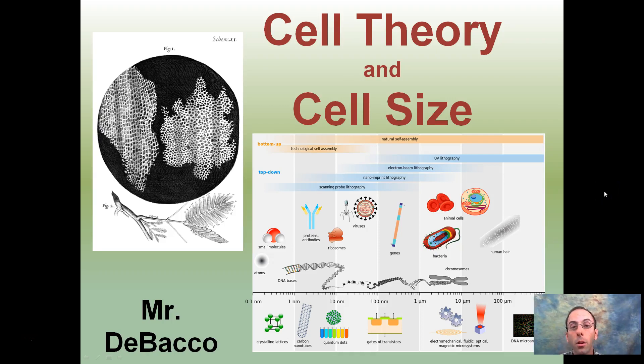Here we're going to look at a brief overview of cell theory and comparative cell size. The image shows scaling all the way down to an atom and small molecules and how they rate in comparison to say a bacteria, an animal cell, or a human hair and what lies in between those two.